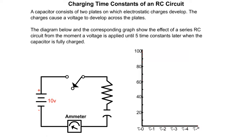The diagram below and the corresponding graph show the effect of a series RC circuit from the moment a voltage is applied until five time constants later when the capacitor is fully charged.